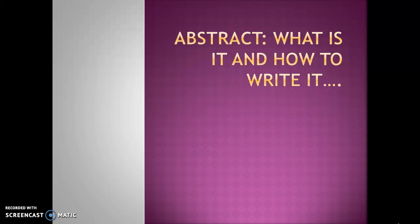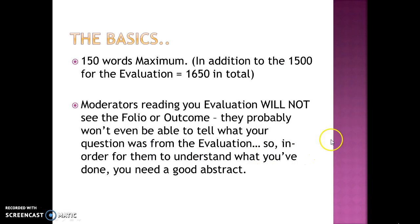The last part of what you need to do for your research project evaluation is the abstract, which will be the first part that the moderators will read. The abstract is 150 words maximum. It's in addition to the evaluation, so the total that you get to write is 1650 words in total. You can't use words left over from the abstract in your main evaluation — it is only 150 words.